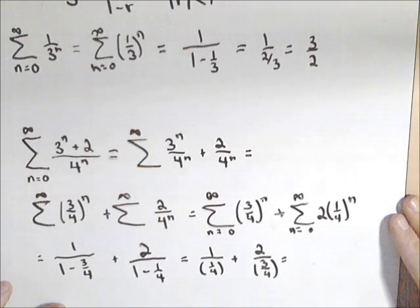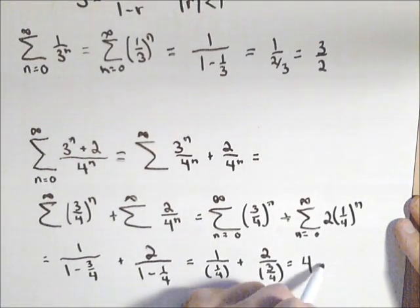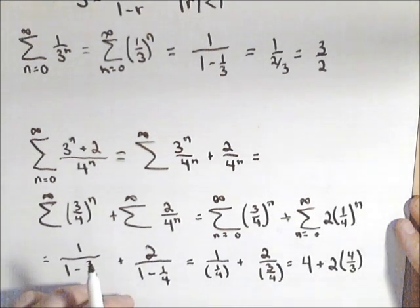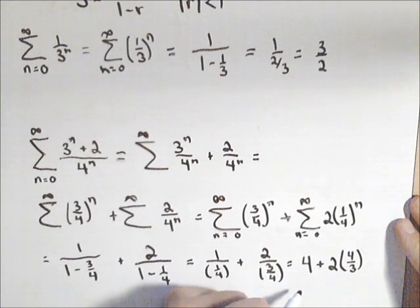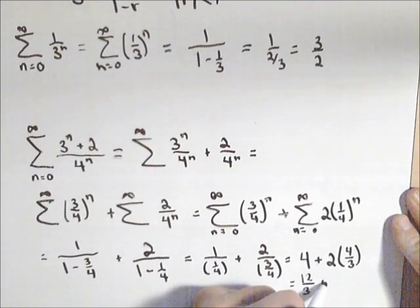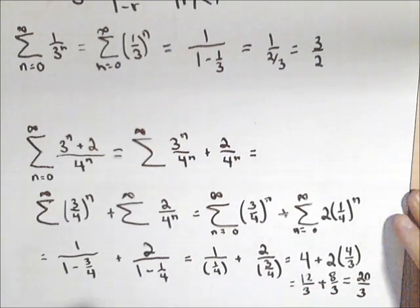We're going to flip both those and multiply. So here we're just going to end up with 4 plus 2 times 4 thirds or 8 thirds. So I have 12 thirds finding a common denominator plus 8 thirds for a total of 20 thirds.